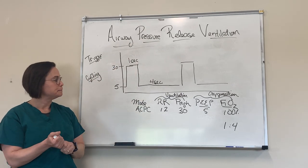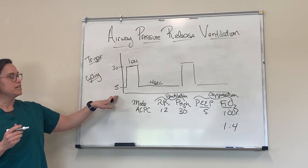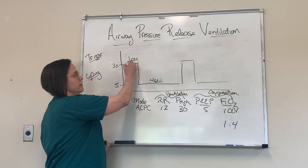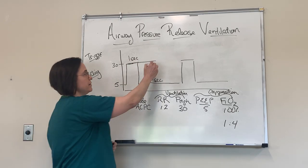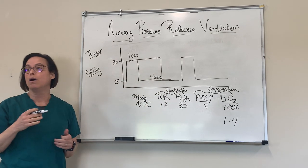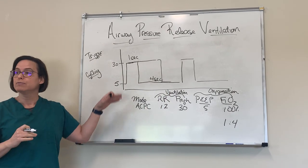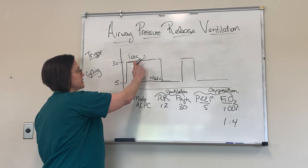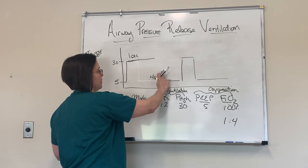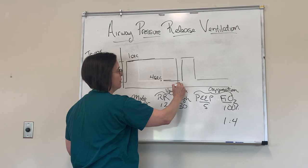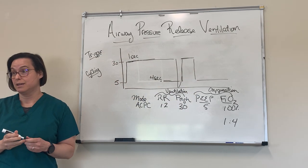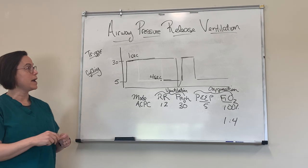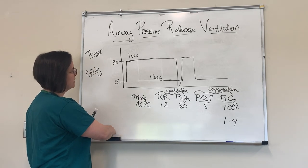This is what that would look like. We sort of go through a progression: this is ACPC. Once I extend this T high longer than my T low, now I'm in a phase we call bi-level — meaning two different levels of pressure. And then as we progress even further along this continuum, we get to something that actually resembles APRV, where we're at that P high almost all the time. Does that make sense? It does.